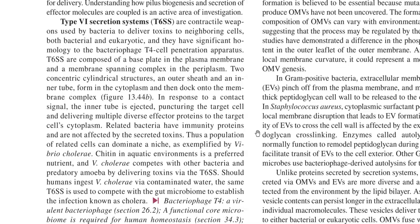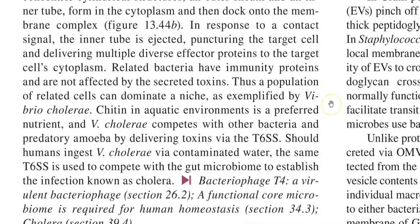In response to a contact signal, the inner tube is ejected, puncturing the target cell and delivering multiple diverse effector proteins to the target cell's cytoplasm. Related bacteria have immunity proteins and are not usually affected by the secretory toxin, allowing a population of related cells to dominate in a niche.